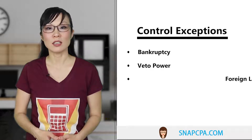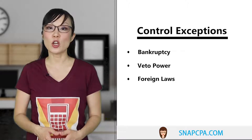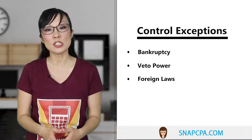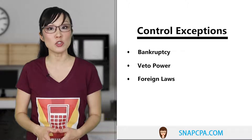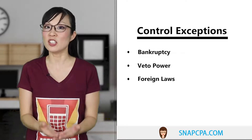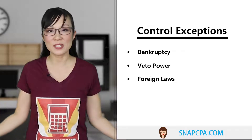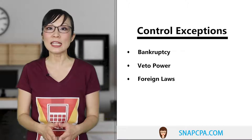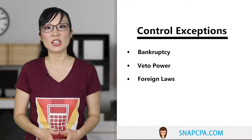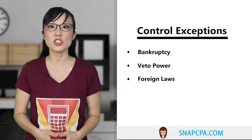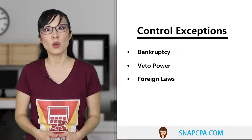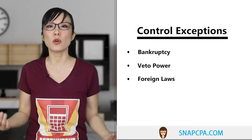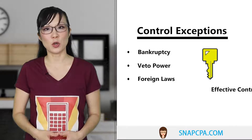Another example involves foreign laws. Certain countries restrict outside ownership and control over their country's businesses. If a foreign country's law says that outsiders cannot control its domestic companies, it doesn't matter whether we own 100% of the company — if it's illegal for us to control, then we don't have control. In each of these examples, a shareholder owns more than 50% of the voting rights, yet still does not control the company. The key here is effective control.